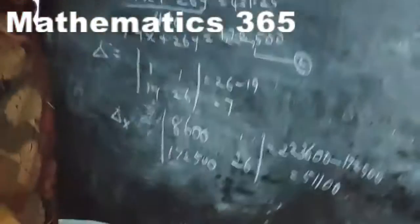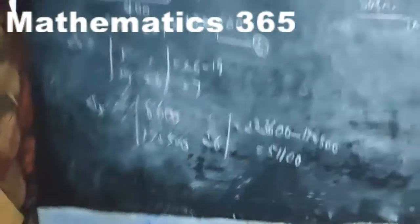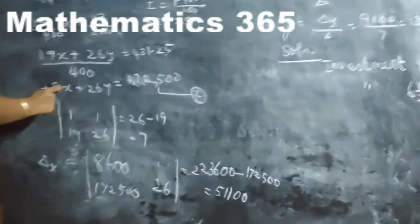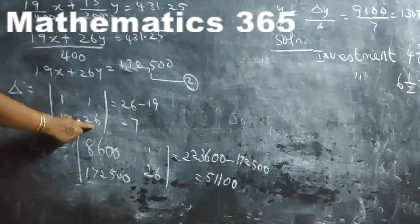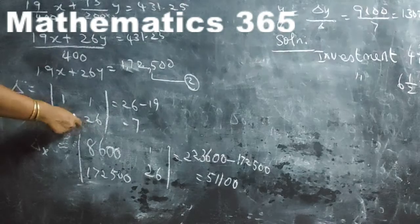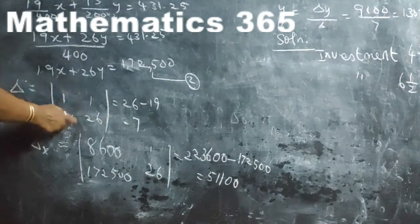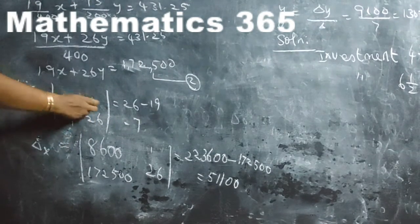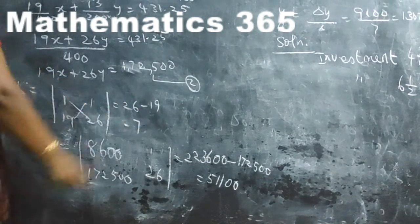Setting up the delta determinant: the X1 coefficient is 1, Y1 coefficient is 1; X2 coefficient is 19, Y2 coefficient is 26. Delta equals 26 minus 19, which equals 7.